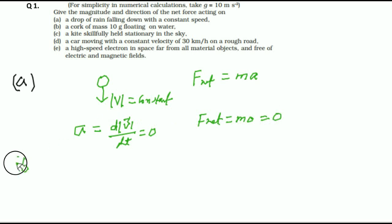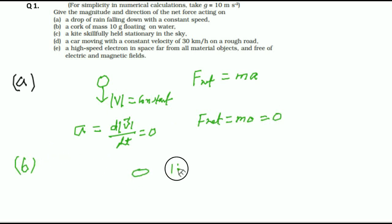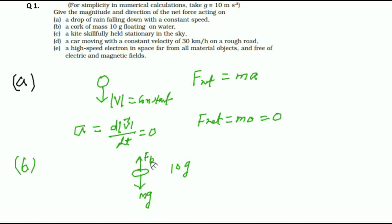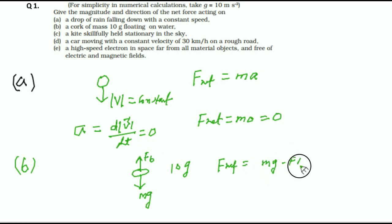In part B, you have a cork of mass 10 gram floating on water. Suppose there is one cork, mass is given 10 gram, floating on water. So, Mg will act in the downward direction and buoyancy force acts in the upward direction. The net force equals Mg minus Fb, which equals 0 because it is floating. So, the net force here is also 0.